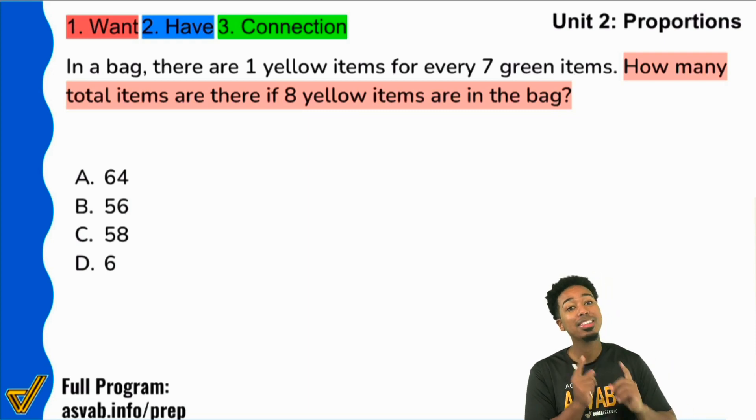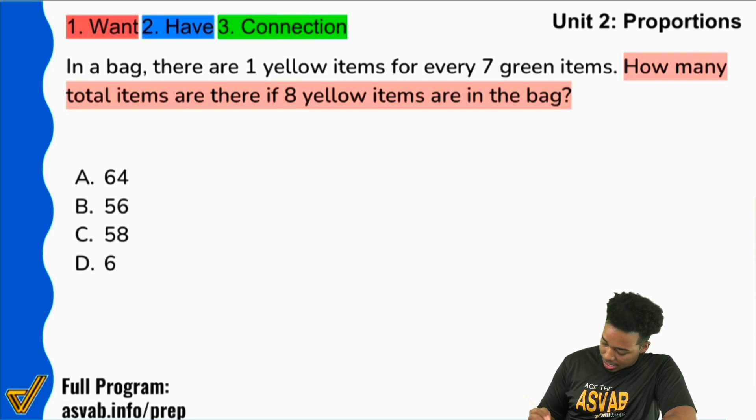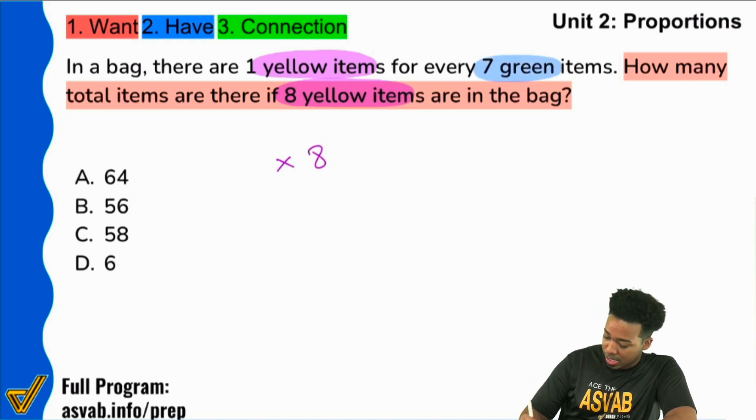Because there are a lot of people that might believe that, hey, we have one yellow and then eight yellow. So that means it's a times eight relationship. And so then some people might believe that if we're trying to go from seven green to however many green, that that's going to be another times eight relationship, which would give us 56 green.